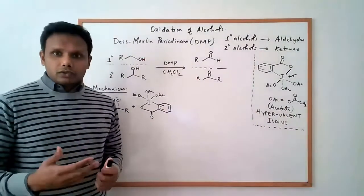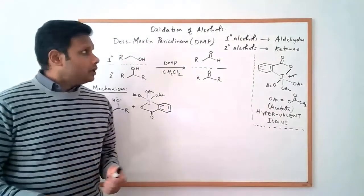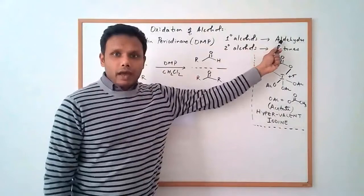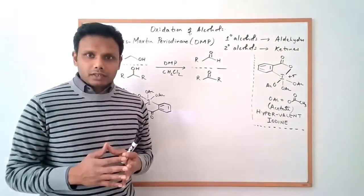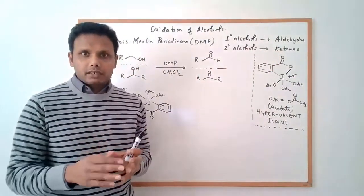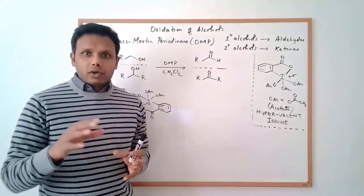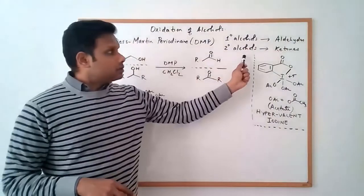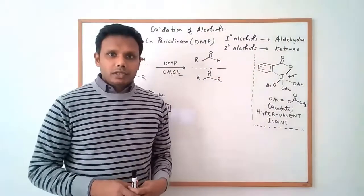Now, DMP is also a versatile oxidant. It can be used for the oxidation of primary alcohols to aldehydes. So it is a selective oxidant because it stops at the aldehyde. It does not do the over-oxidation to the carboxylic acid. Similarly, secondary alcohols are converted into ketones.